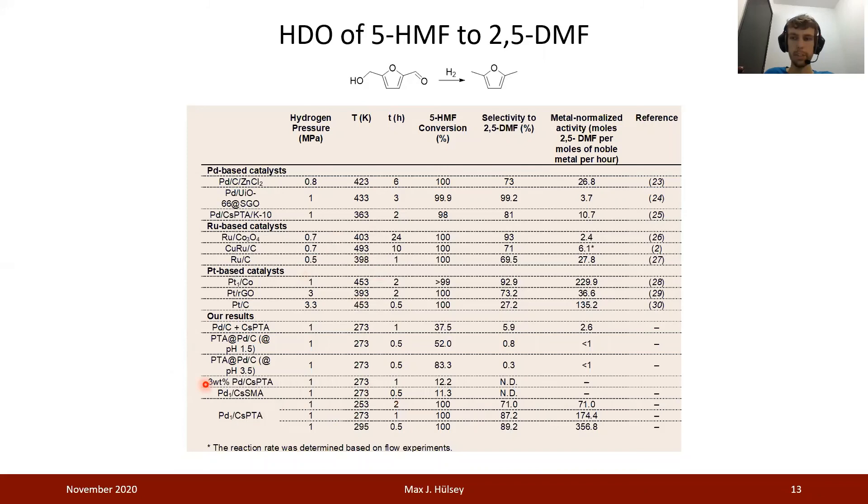We have used a catalyst with a significantly higher weight loading of palladium. For the single-atom catalyst, the weight loading is actually 0.15 weight percent, so relatively low. While if we use a weight loading of 3 weight percent of palladium on cesium PTA, we literally have no activity for the HDO whatsoever, again confirming that we need the single-atom dispersion of palladium on the support to achieve reasonable activity. If we use a physical mixture of palladium on carbon and cesium PTA, or we use a commercial palladium on carbon catalyst and we impregnate PTA onto the surface at two different pH, then again we observe that we have essentially an inactive catalyst, at least under those given conditions for the HDO of 5-HMF to 2,5-DMF.